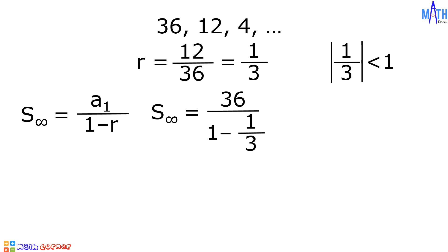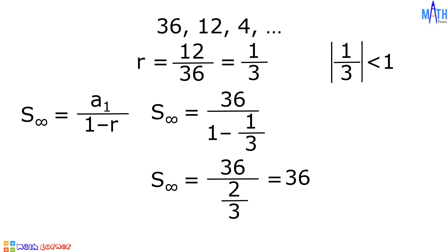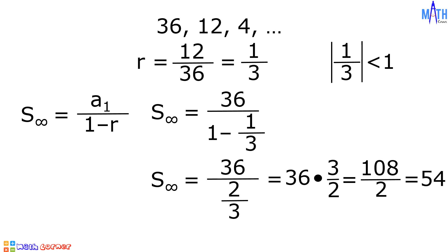Sum to infinity is equal to a sub 1, which is 36, divided by 1 minus r, which is 1 third. So sum to infinity equals 36 divided by 2 thirds. This is also equal to 36 times the reciprocal of 2 thirds, which is 3 halves. 36 times 3 halves equals 108 divided by 2, which is 54. And 54 is the sum of the infinite geometric sequence 36, 12, 4, and so on.